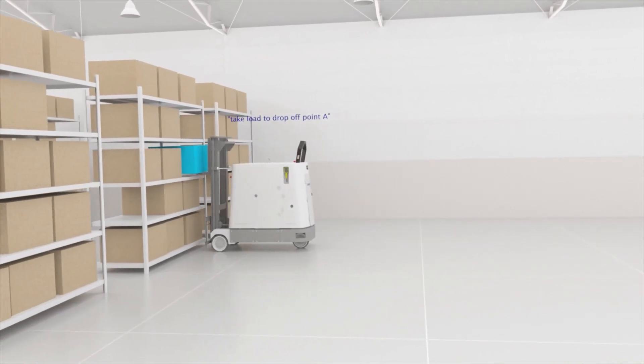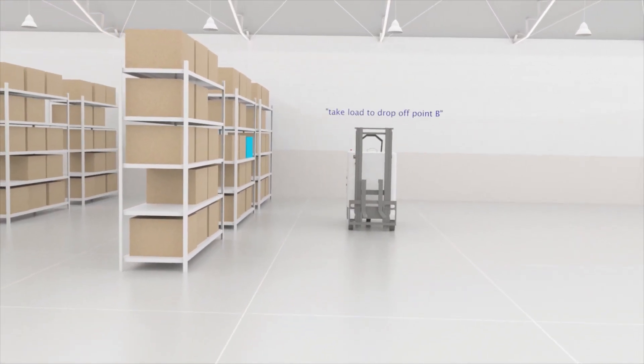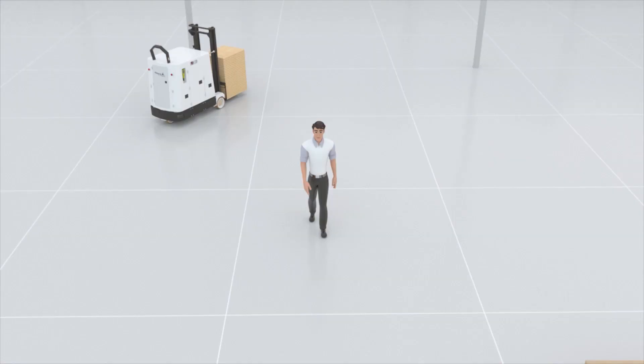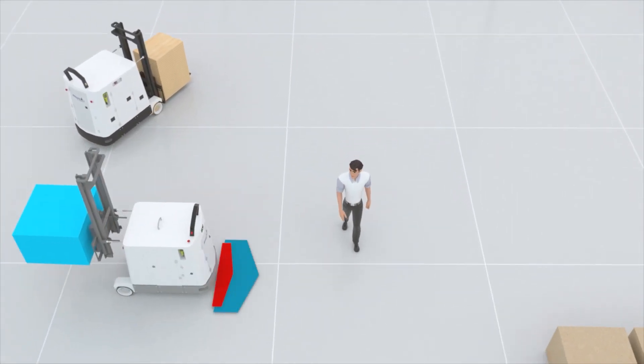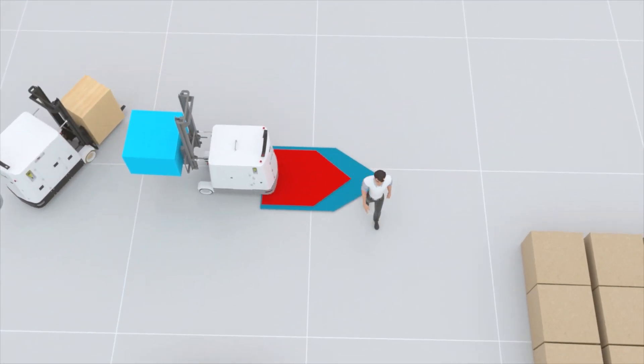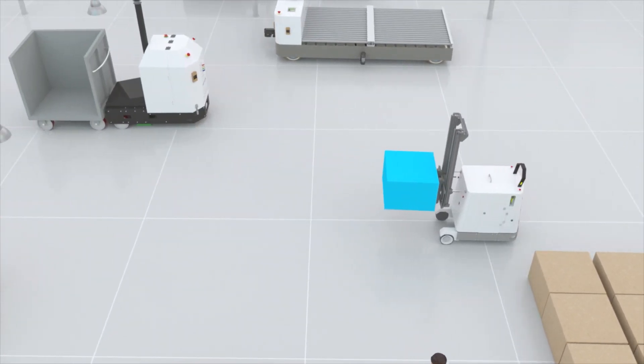Once product is delivered to appropriate locations, robots are automatically assigned a new task to complete. Built-in safety sensors stop the robot anytime an object or person is in its path until moved and safe to proceed.